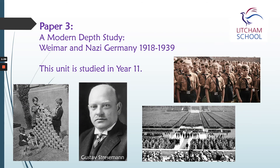The final unit is for Paper 3, and this is the Modern Depth Study. For this unit, we study Weimar and Nazi Germany. We look at Germany following the immediate end of World War I and the huge chaos that followed, how the Weimar politicians struggled to find a way to put Germany back together. We also study the rise of Nazism and how the Nazis changed life in Germany. This unit stops at the beginning of World War II, in 1939.